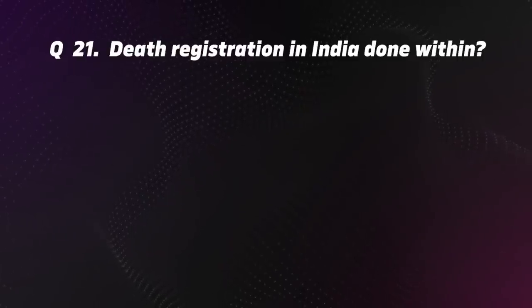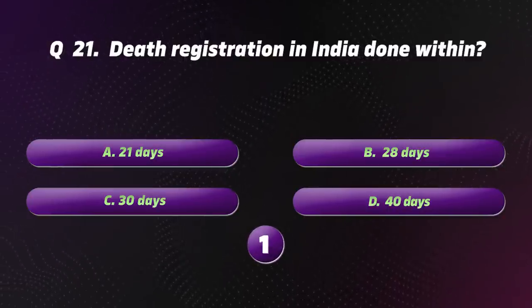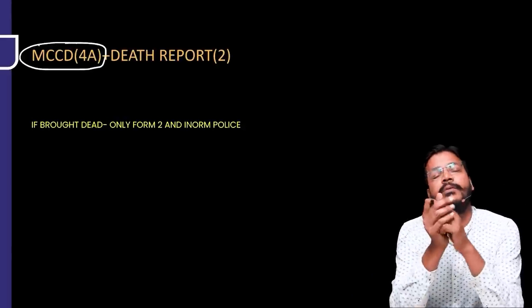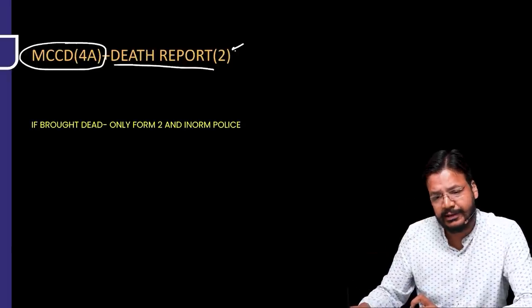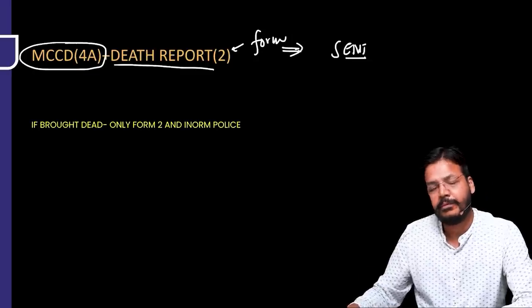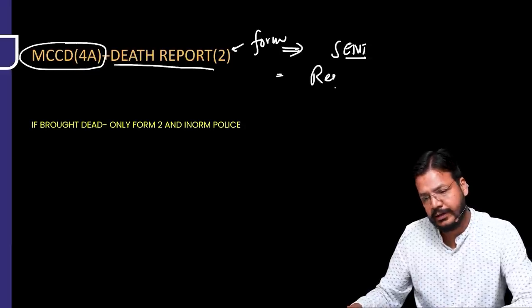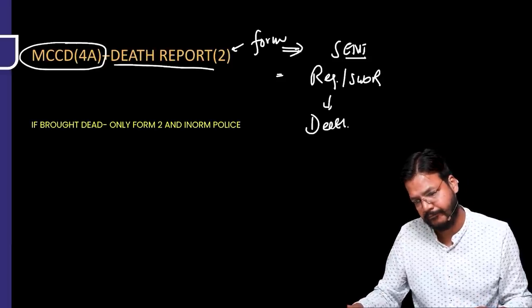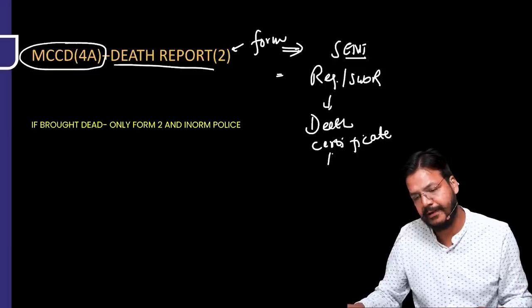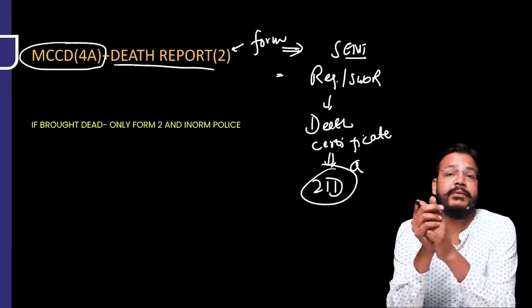Question 21. Death registration in India must be done within A — 21 days. The doctor fills out the MCCD (Medical Certification of Cause of Death) on Form 4 or 4A, along with a death report. These are sent to the Registrar or Sub-Registrar of the State Government. The death certificate must be issued within 21 days.